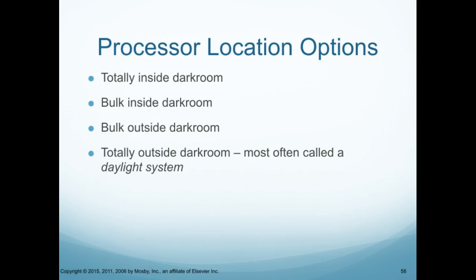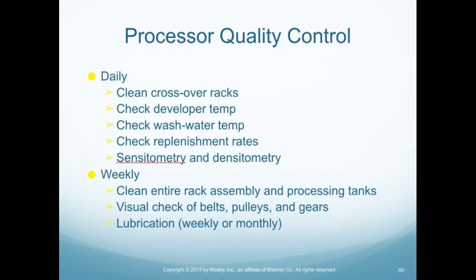There are different places to locate the processor. It can be completely inside the dark room, or the bulk of it can be outside the dark room as long as the feed tray is in complete darkness. Or it can be totally outside of the dark room, which is most likely called daylight systems — very similar to what CR readers are today.